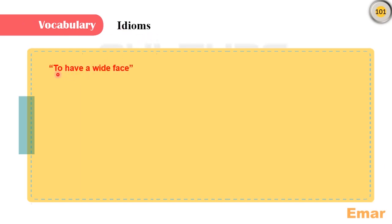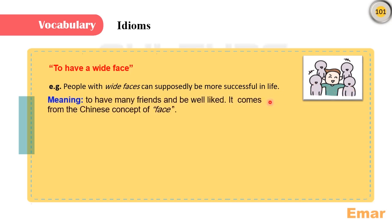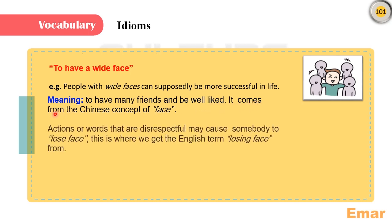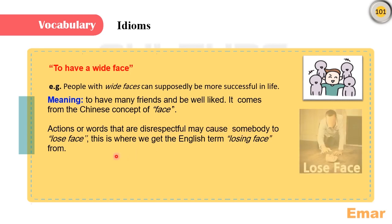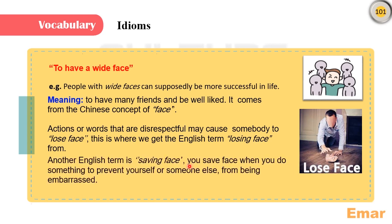To the vocabulary: idioms. Take a look at these idioms in red. To have a white face — for example, people with white faces can supposedly be more successful in life. The meaning is to have many friends and be well-liked. Actions or words that are disrespectful may cause somebody to lose face — this is where we get the English term 'losing face' from. Losing face means doing something disrespectful or embarrassing. On the other hand, saving face is when you do something to prevent yourself or someone else from being embarrassed.